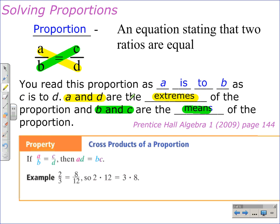And this gives us the concept of cross products. It's a property of mathematics: cross products of a proportion. If a is to b as c is to d, then a times d equals b times c, or the product of the extremes equals the product of the means.